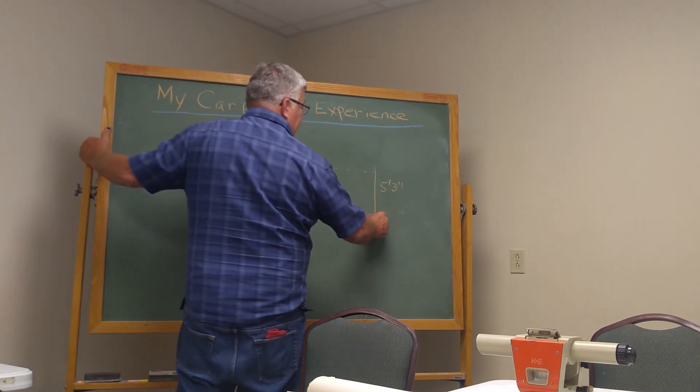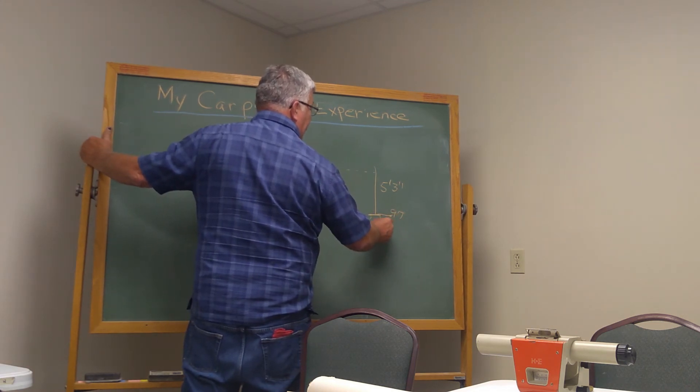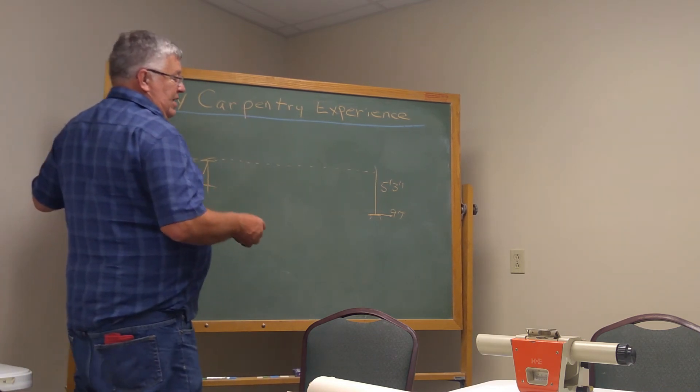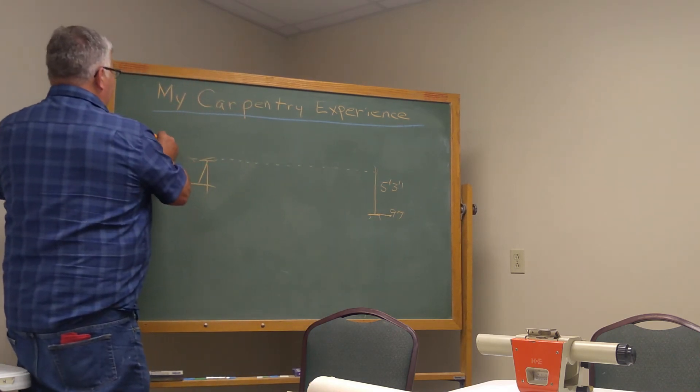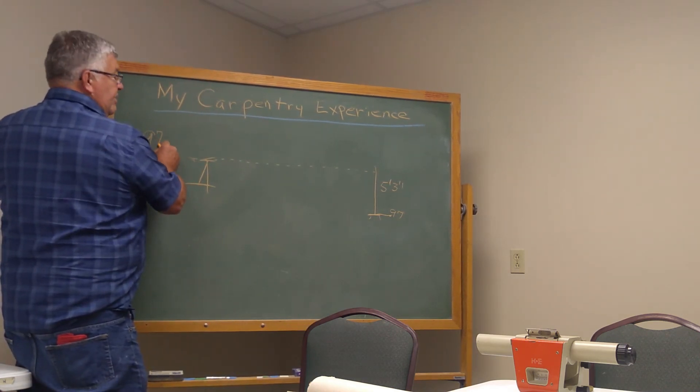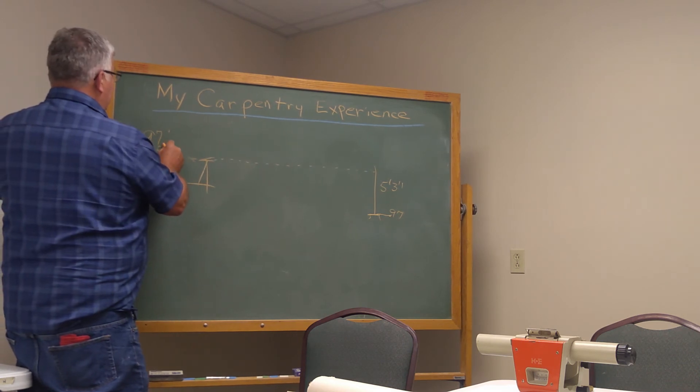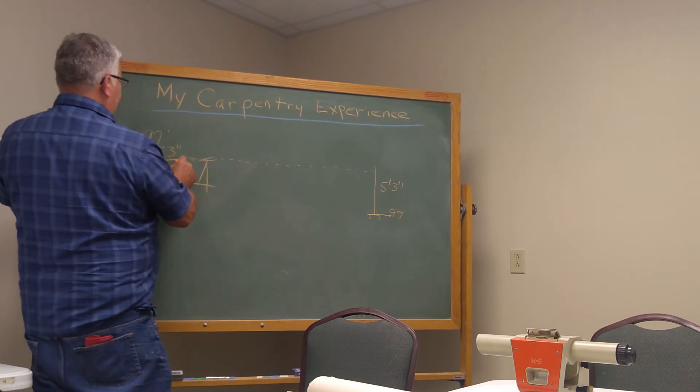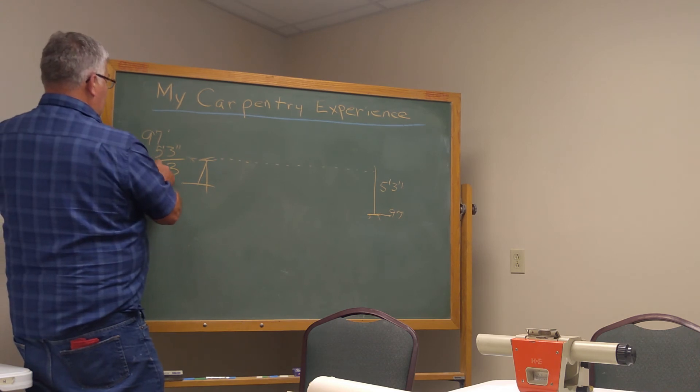And I'm given an elevation of ninety-seven feet here. That's actually just a made-up number. So, now, I would take my elevation, ninety-seven feet, and I would add my five foot three inches. So, I would write in my book this first shot, nine and five, that'd be one oh two and three inches.